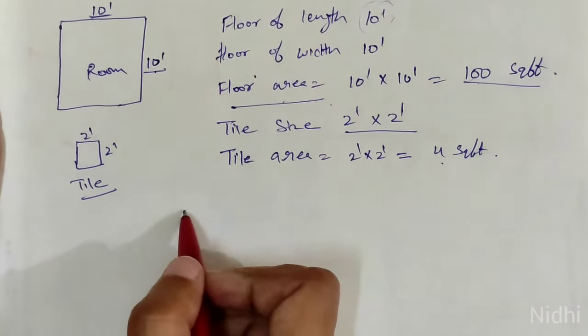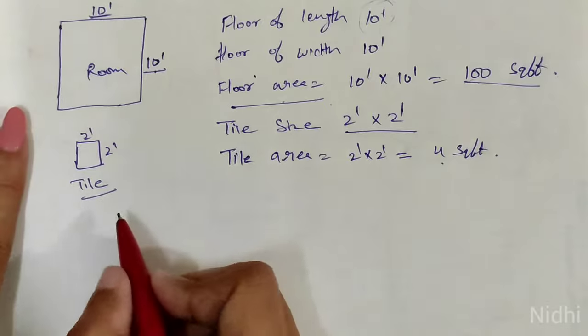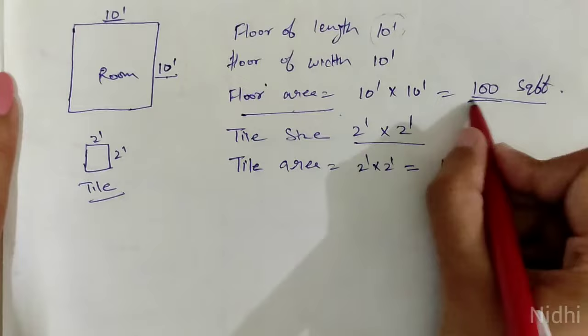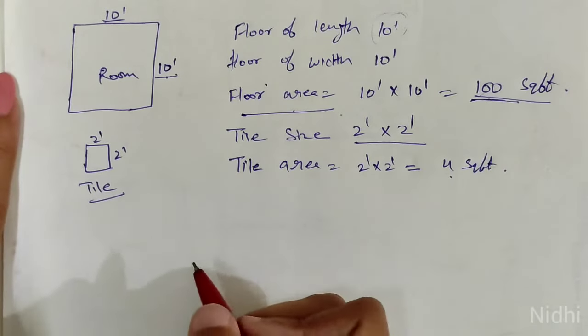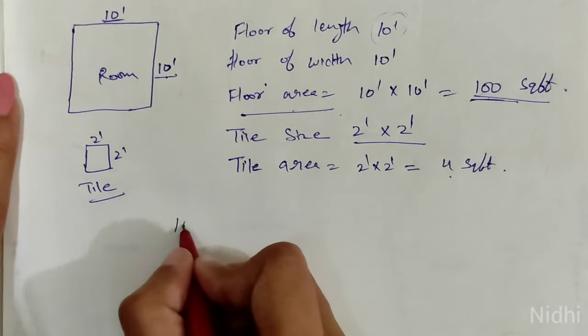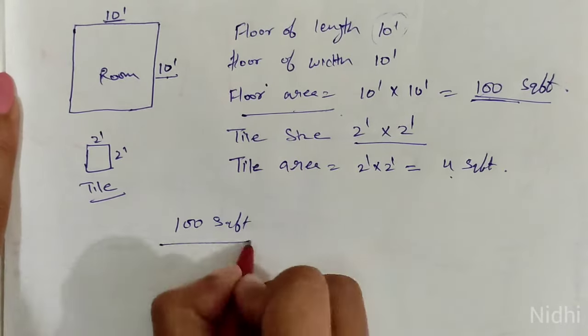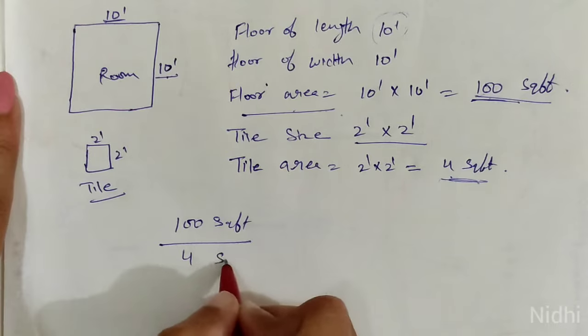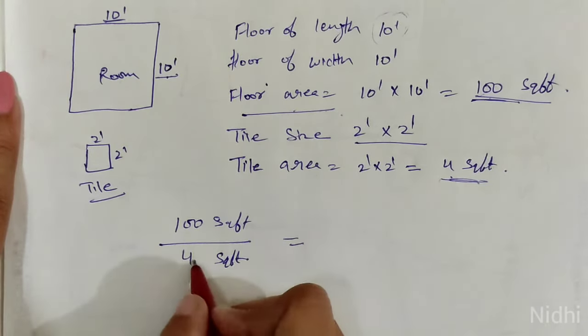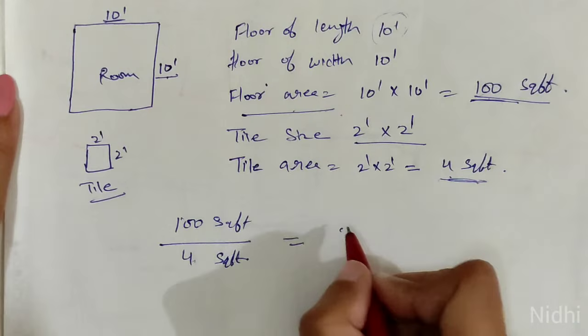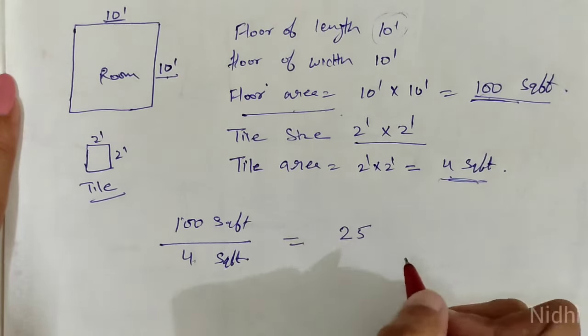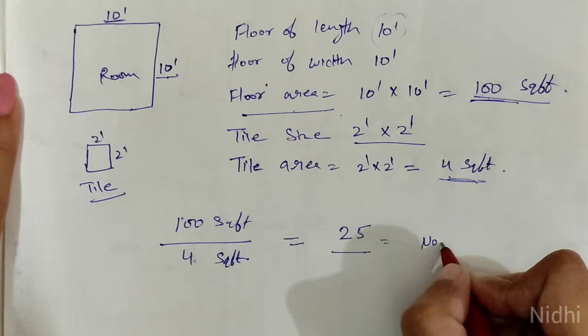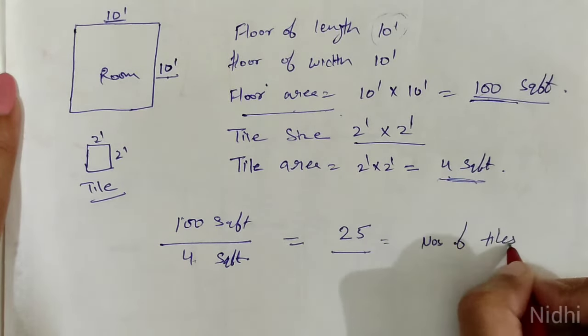So now let's check the number of tiles. Number of tiles: that is room area, 100 square feet, divided by tile area, 4 square feet. How many tiles will be used in this room? The number of tiles is 25 tiles.